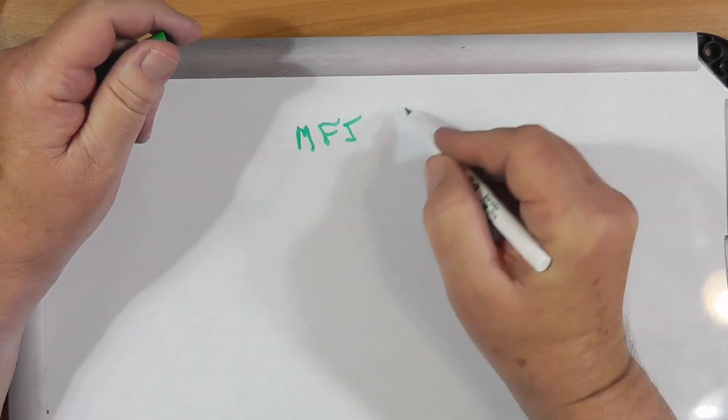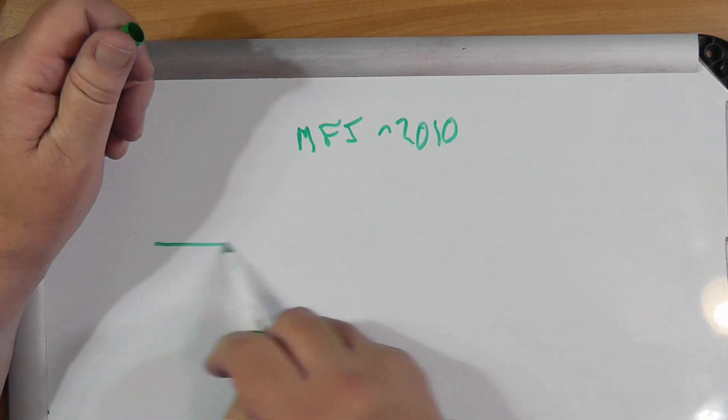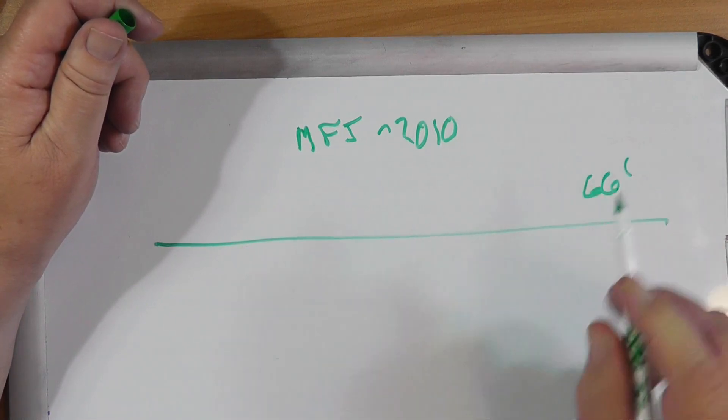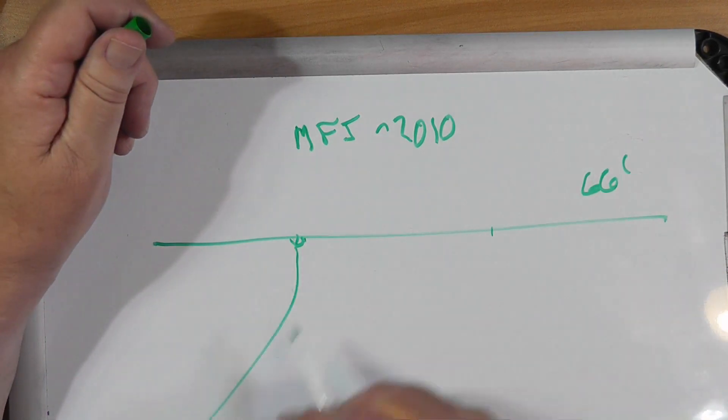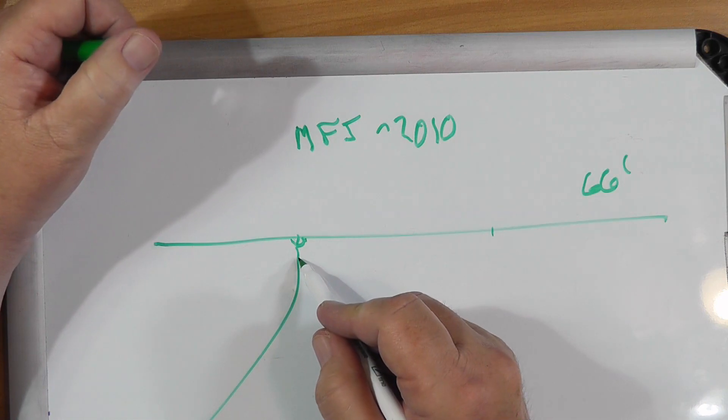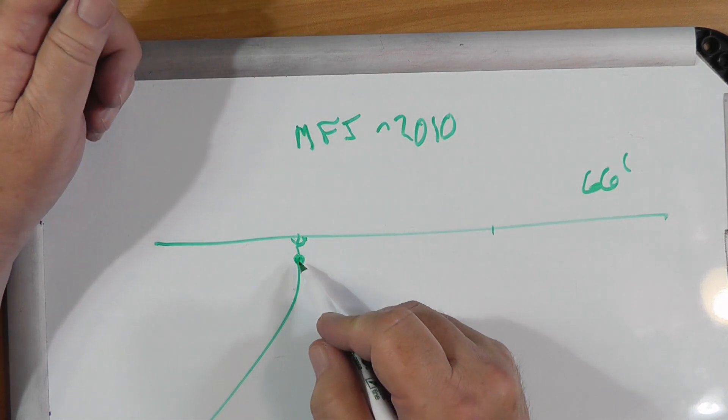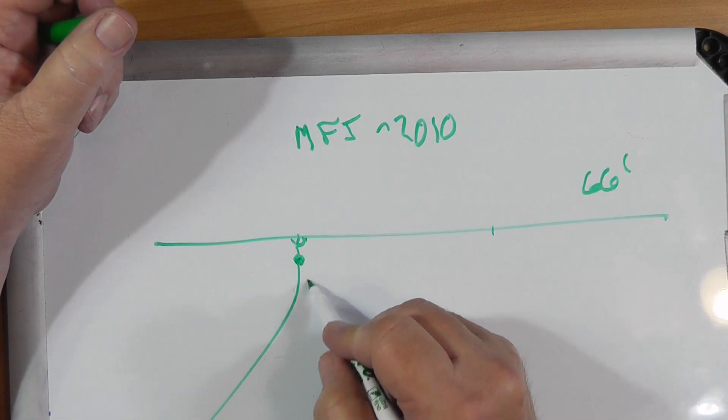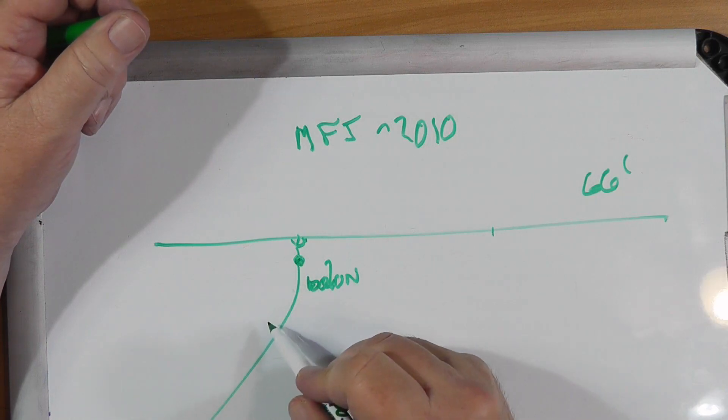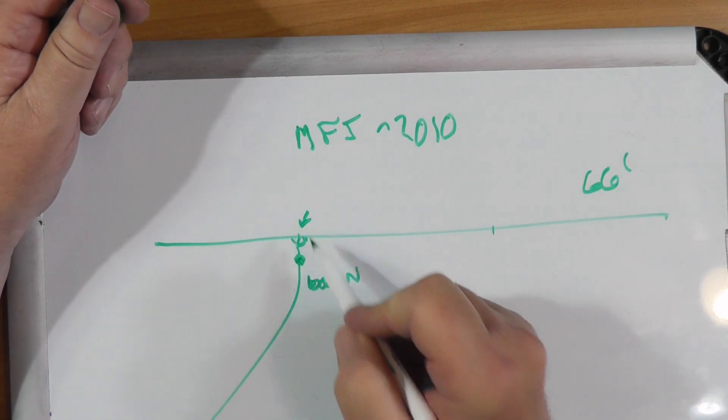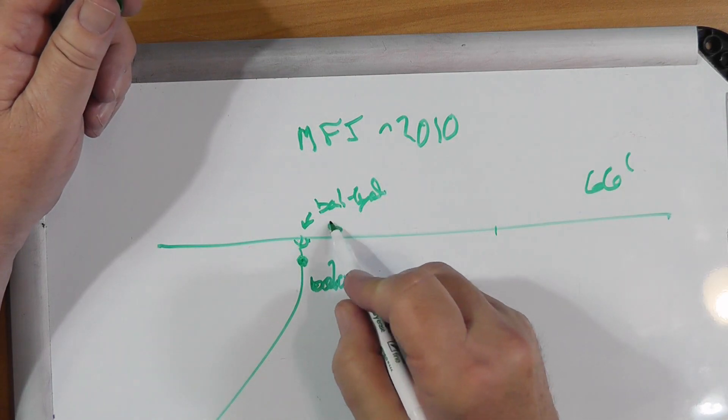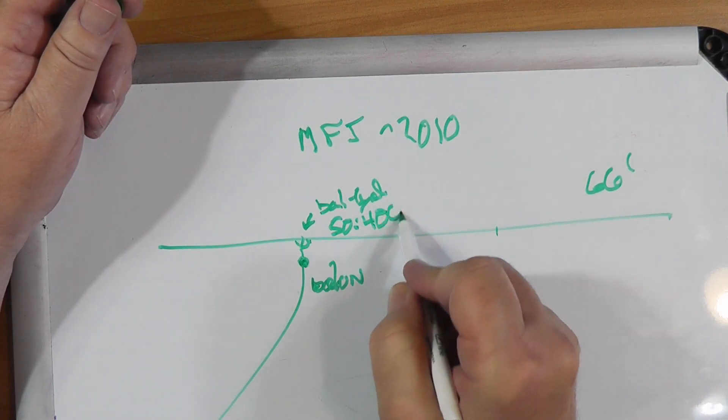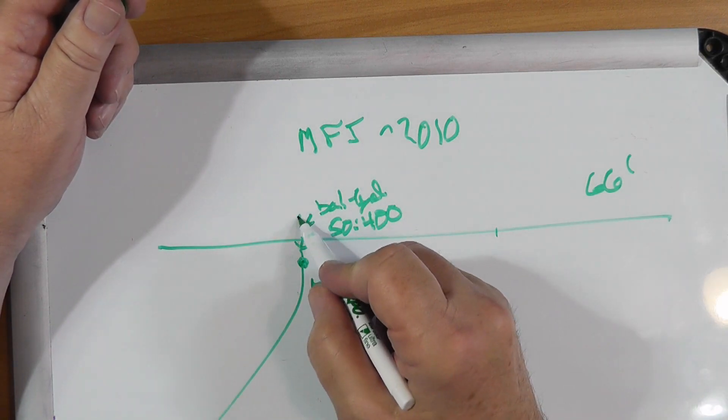Now, the reference antenna right now is the MFJ 2010. The MFJ 2010 is a dipole that's 66 feet long, and at the one-third point, it is fed here. There's two baluns in there. There's a coax balun to change from unbalanced coax to balanced up above.